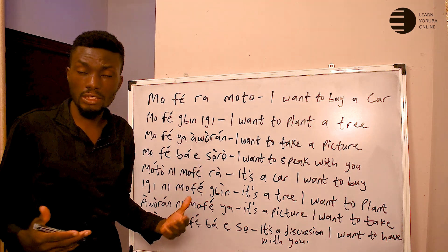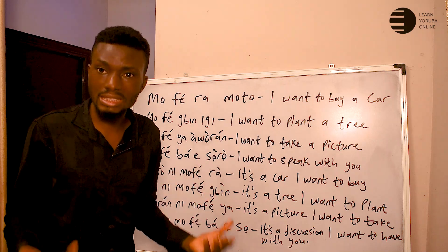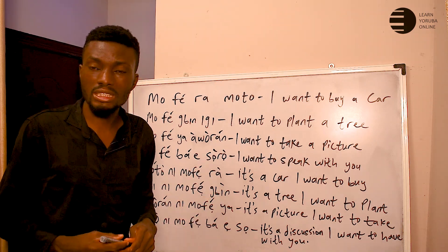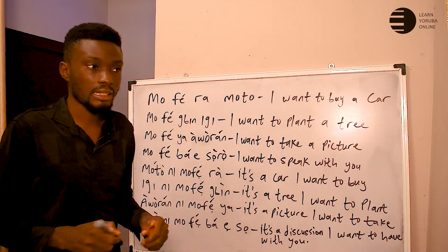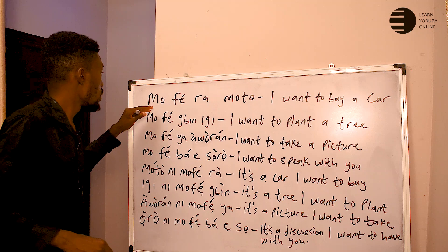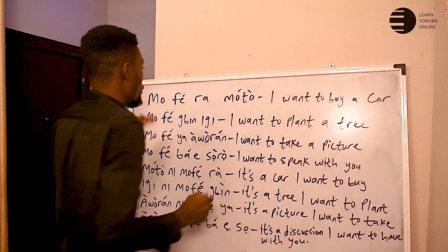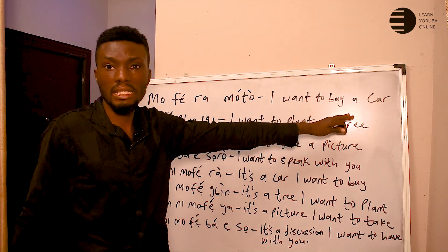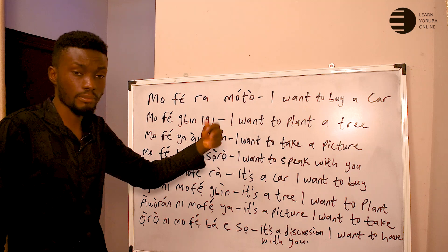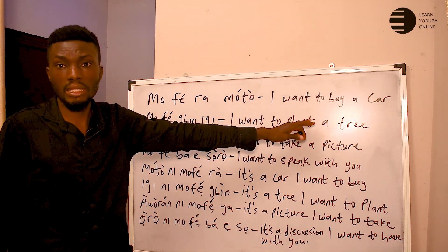In English, if you want to express interest, you use the word 'want' — W-A-N-T. In Yoruba, that 'want' is just 'fẹ'. So 'mofera moto' means 'I want to buy a car.' 'Car' in Yoruba is most often called 'moto' or 'okọn' — whichever is more convenient — but 'moto' is perfect. So 'mofera moto' means 'I want to buy a car.'